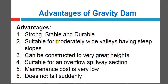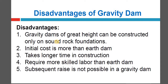Gravity dams do not fail suddenly — failure case studies exist, but they will give some warning before failure. For concrete gravity dams, it will give warning in terms of cracks and joints for some months. If we fix those cracks, the life of the dam can be extended; otherwise, other remedial actions can be taken. Gravity dams can give warnings one or two months prior to failure. Other dams that are not rigid, which are flexible in nature, sometimes give no warning before failure, causing a lot of destruction on the downstream side.